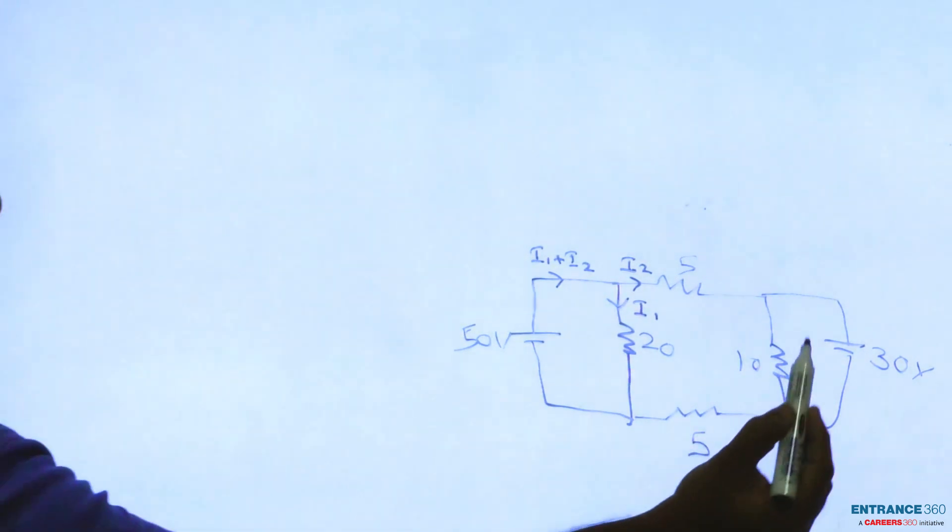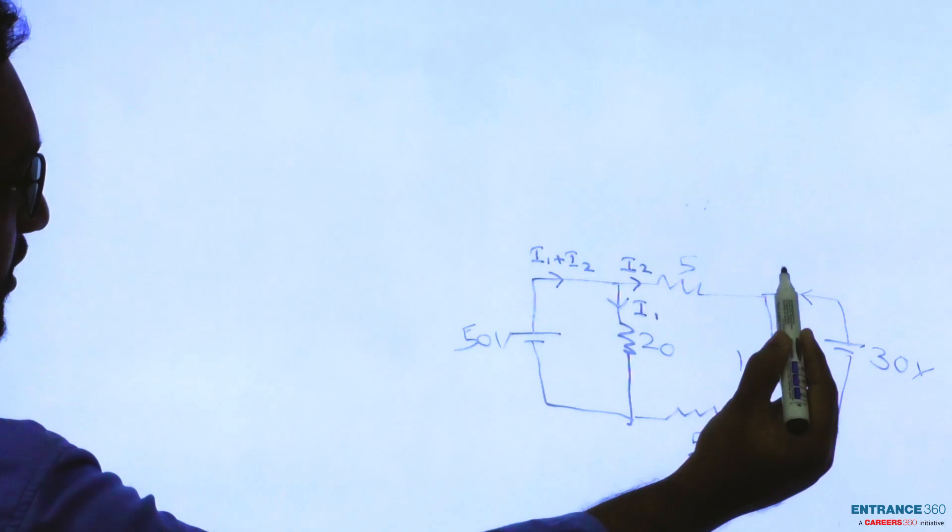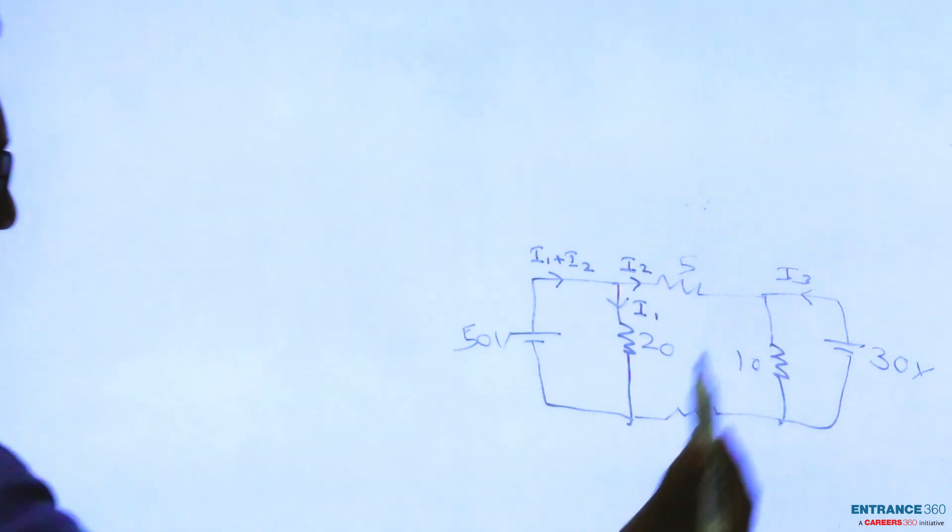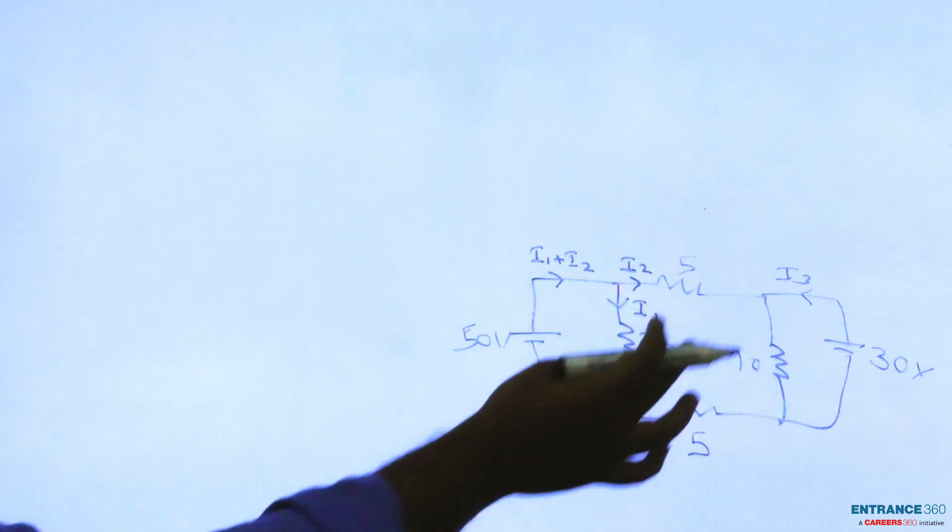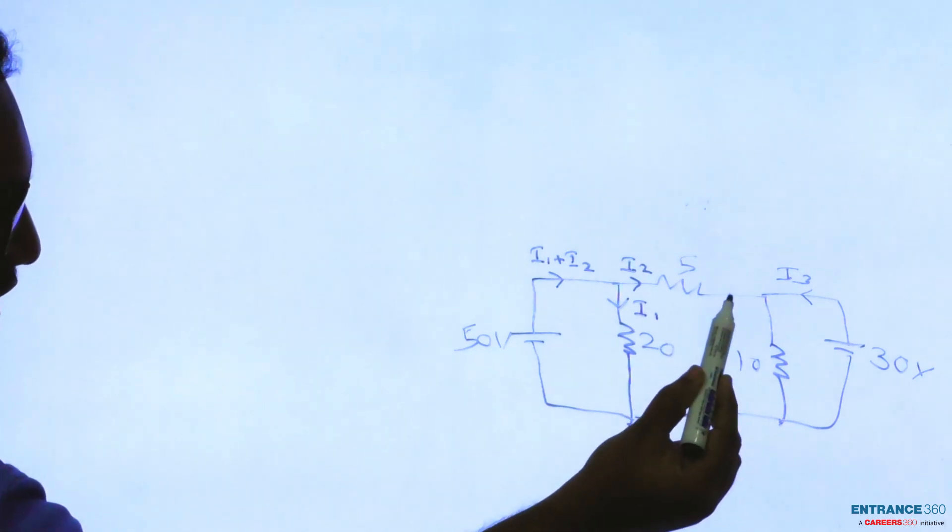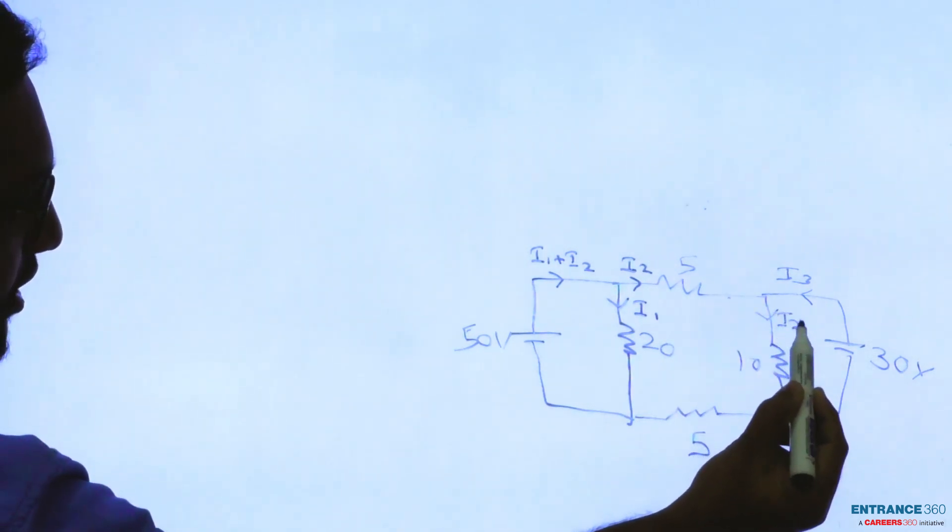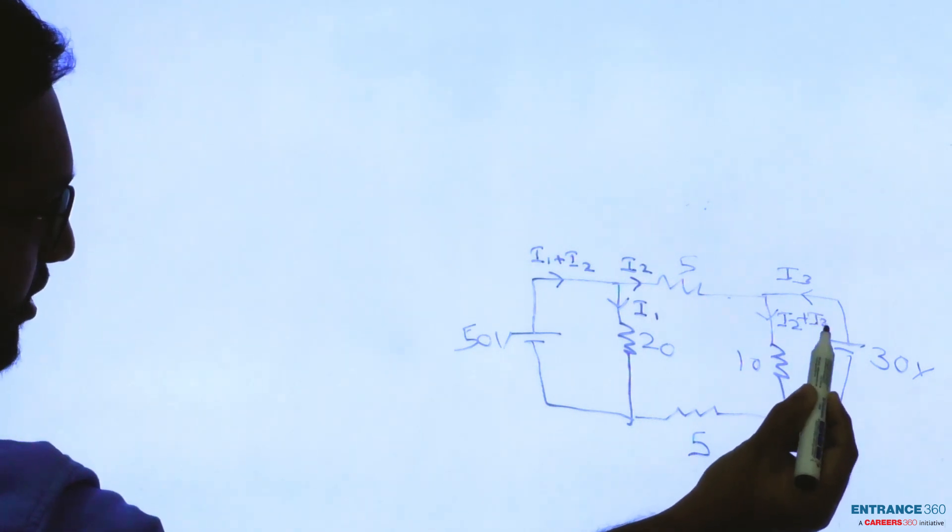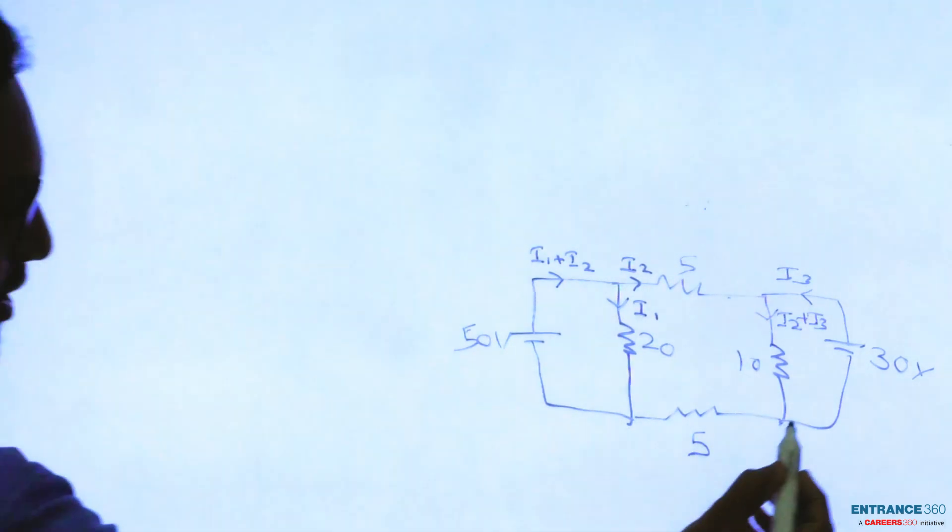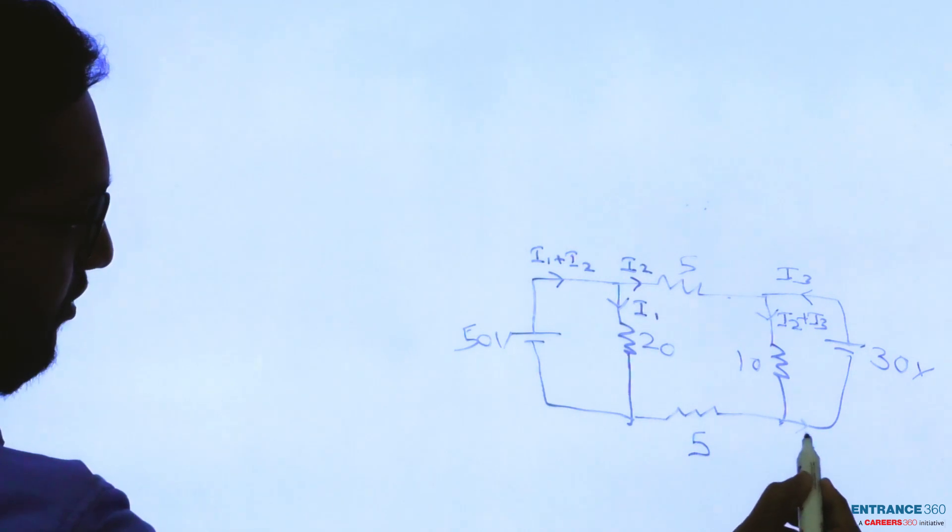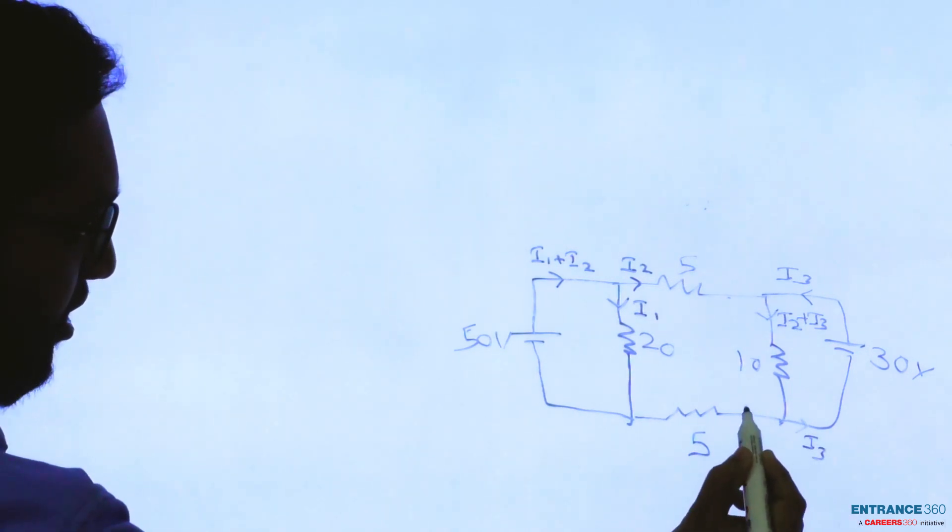Say a current of I3 is coming from the 30 volt battery, so current flowing through the 10 ohm resistance will be I2 plus I3. Current I3 will flow back here and I2 will be flowing through.